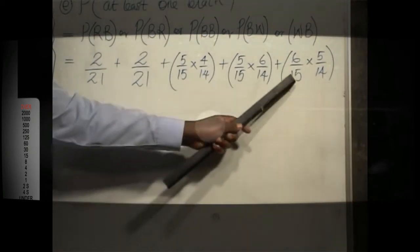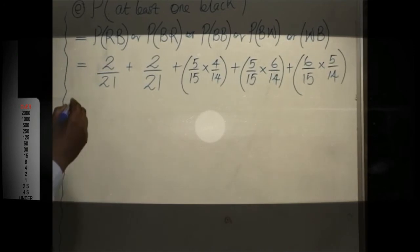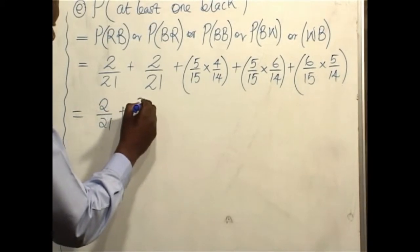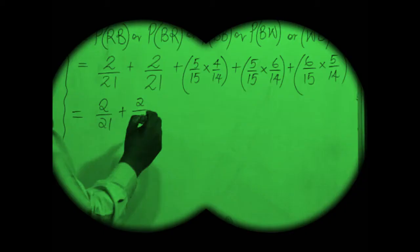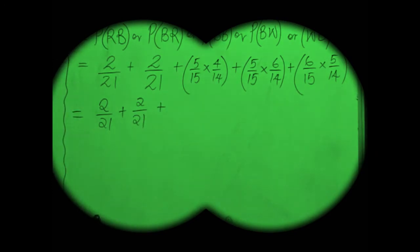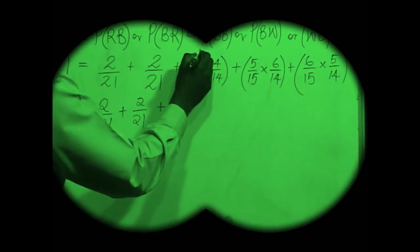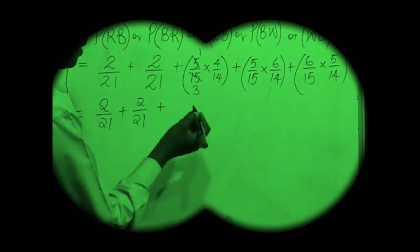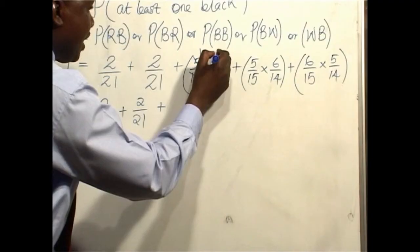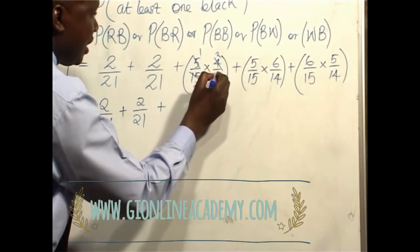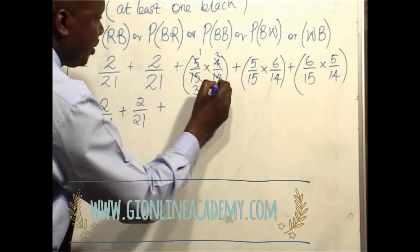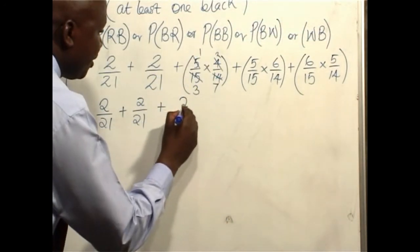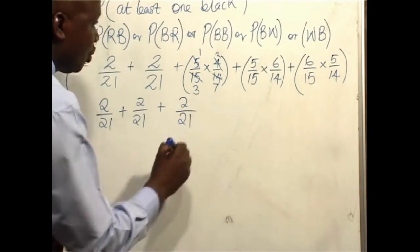The ones that have not yet been simplified — before we move ahead, we will simplify them as follows: 2 over 21 plus 2 over 21 plus. 5 divided into 15 is 3. 2 divided into 4 is 2 and 2 divided into 14 is 7. When we multiply, it's going to be 1 times 2 which is 2, divided by 3 times 7 which is 21.